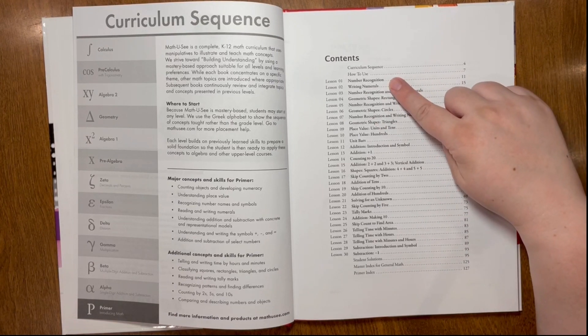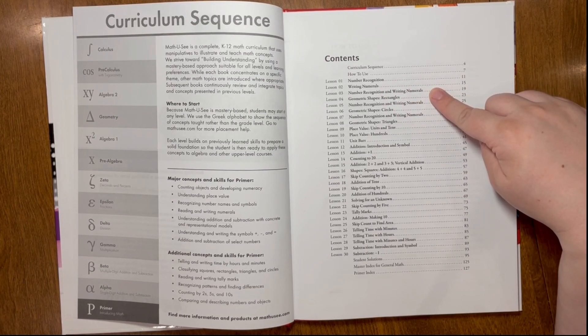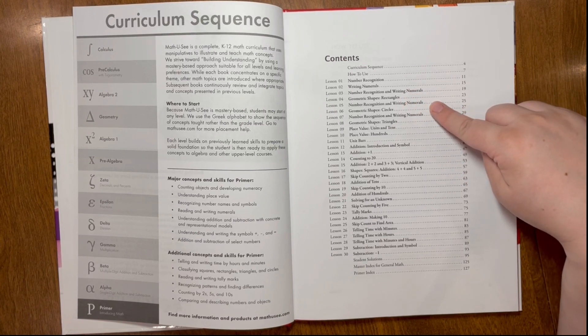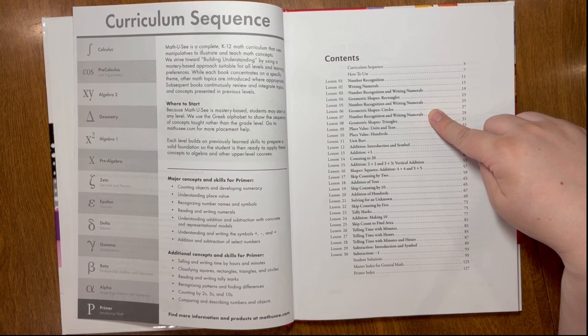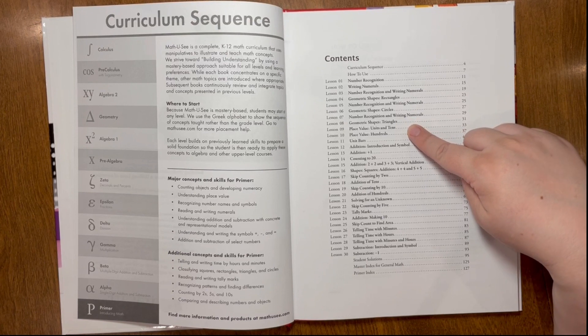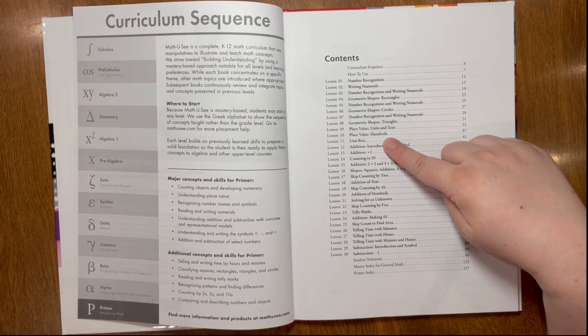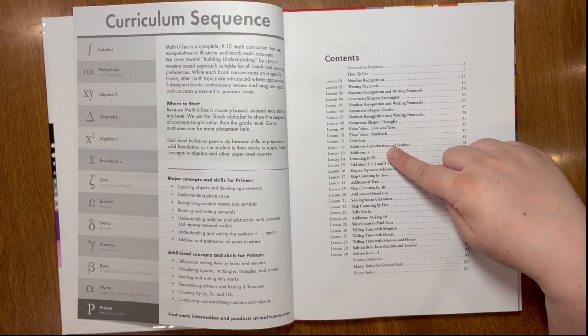Lesson one is number recognition. Lesson two, writing numerals. Lesson three, number recognition and writing numerals. Lesson four, geometric shapes, rectangles. Lesson five, number recognition and writing numerals. Lesson six, geometric shapes, circles. Lesson seven, number recognition and writing numerals. Lesson 8, geometric shapes, triangles. Lesson 9, place value, units and tens. Lesson 10, place value, hundreds. Lesson 11, unit bars. Lesson 12, addition, introduction and symbol. Lesson 13, addition plus 1.